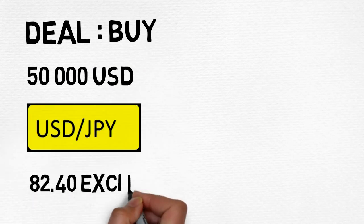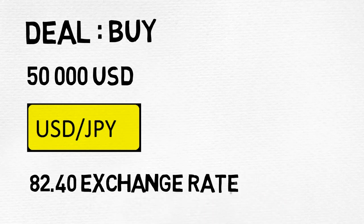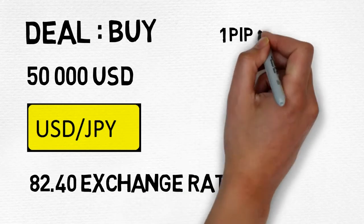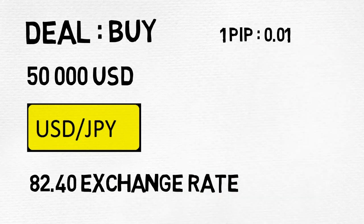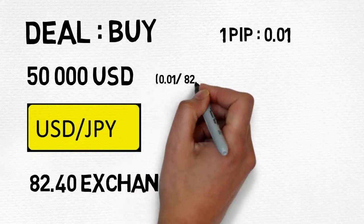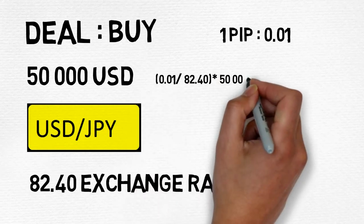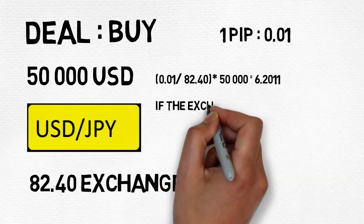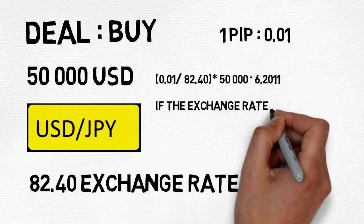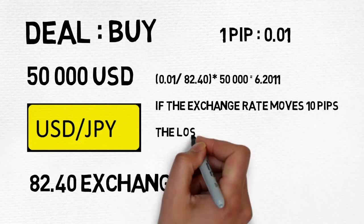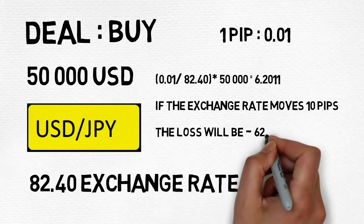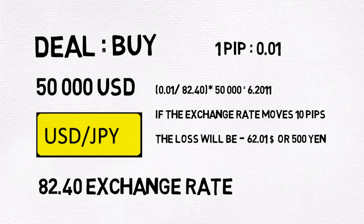Another example is when we buy 50,000 worth of US dollars against the Japanese yen at 80.63. The PIP value here is calculated by dividing 0.01 by 80.63 and multiplying by 50,000, which equals 6.2011. If the movement is a 10 pip loss, our loss would be 62.01 yen.